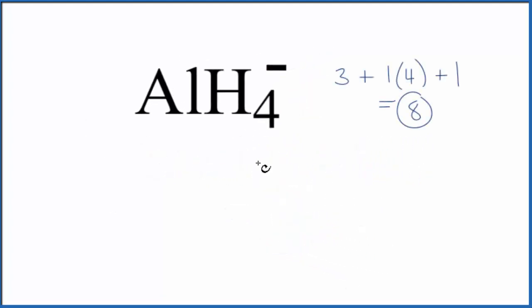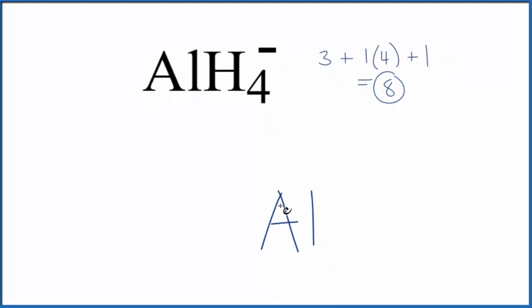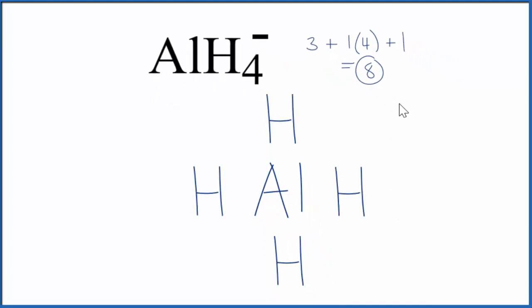When we draw a Lewis structure, hydrogen is always on the outside. We're going to put the aluminum here in the center and we have four hydrogen atoms. So let's put four hydrogen atoms around the aluminum. Remember we have eight total valence electrons. So we're going to put a pair of electrons between these atoms here and that's going to form our chemical bonds.